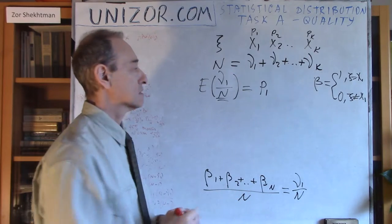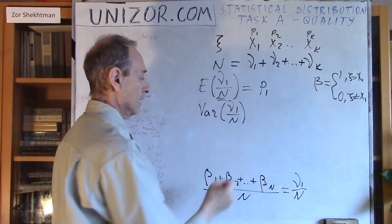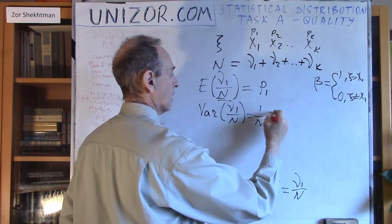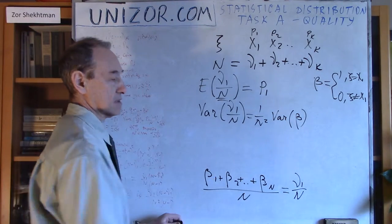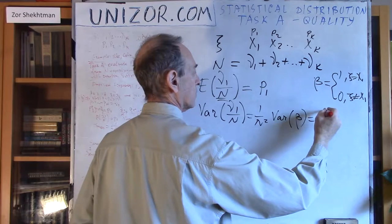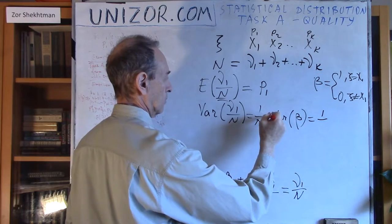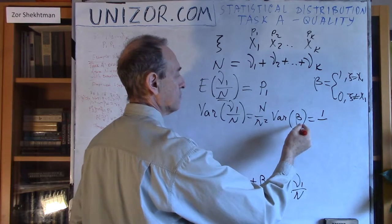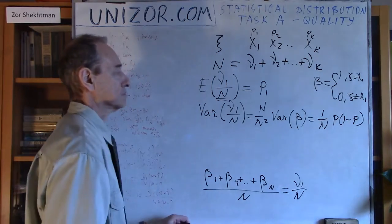Now, what's the variance? We know that the variance of the average (ν₁/n) equals 1/n² times n times the variance of β, since each one has exactly the same variance as β. We know from Bernoulli variables that Var(β) equals p times (1 − p), or specifically p1(1 − p1). So the variance of ν₁/n is p1(1 − p1)/n.